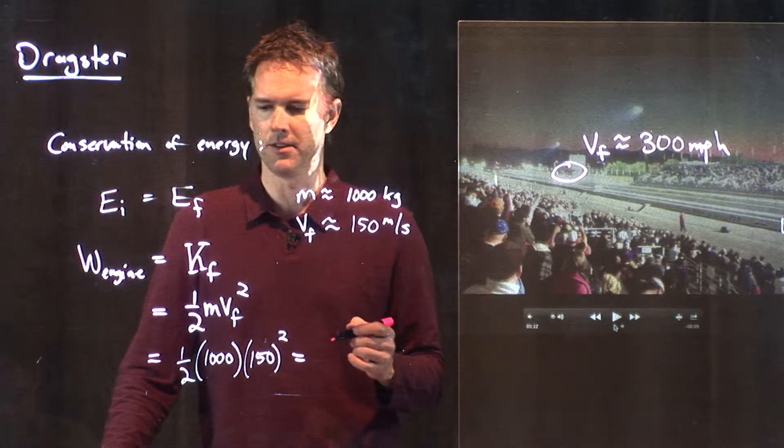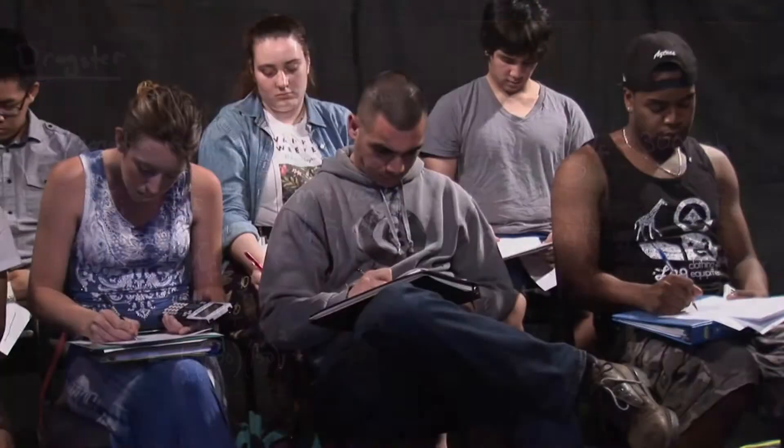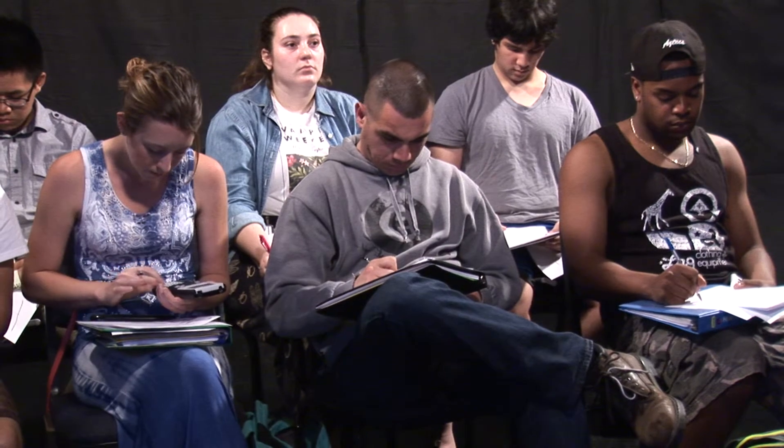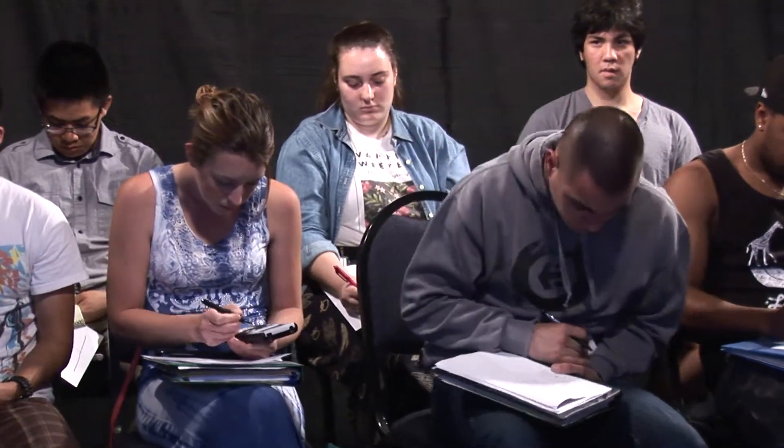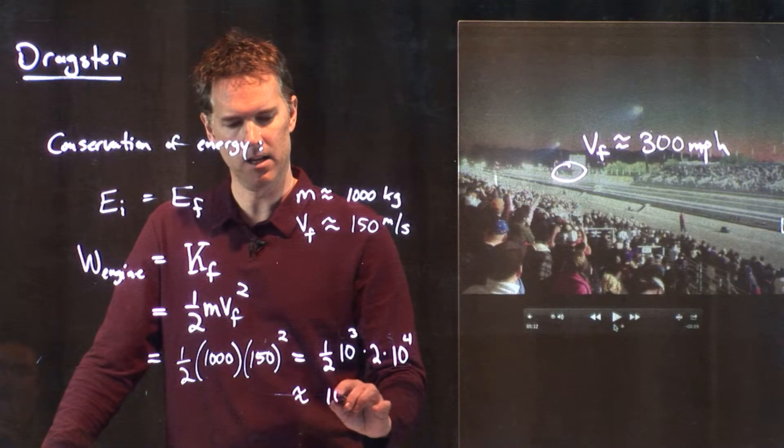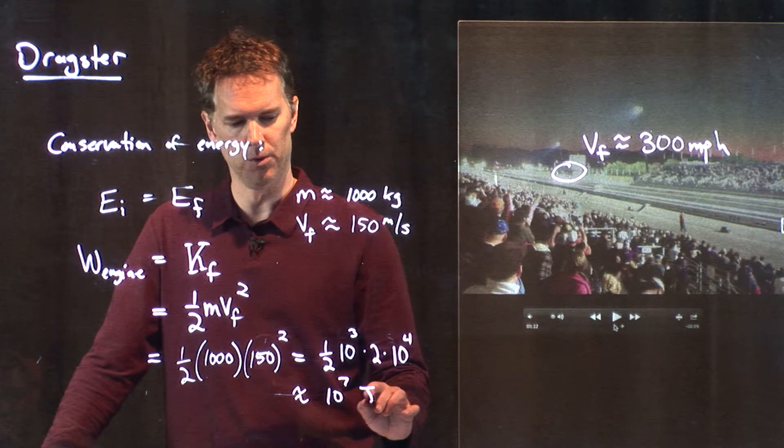Why don't you guys pull out your calculators and tell me what you get if you do that. And I will approximate it here. So, we have a half times 10 to the 3. And then we've got 1.5 times 10 to the 2 squared. 1.5 squared is a little over 2. But we'll just say it's 2. And that's going to be times 10 to the 4. And so, this is going to be approximately 10 to the 7 joules.